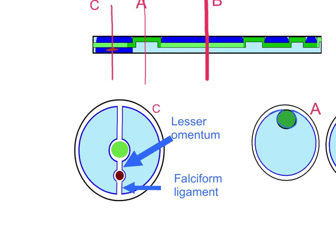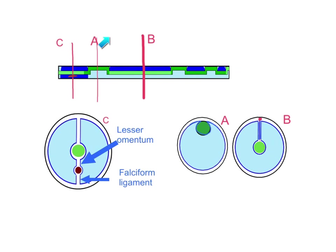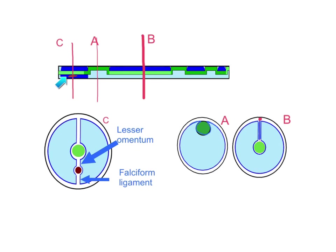In summary: cut A represents what retroperitoneal bowel looks like; cut B represents bowel that is called intraperitoneal but only has dorsal mesentery; and cut C represents bowel that has both dorsal and ventral mesenteries, referring to the foregut, which includes the stomach and the first part of the duodenum.